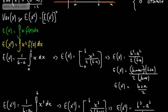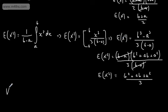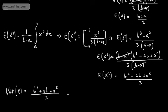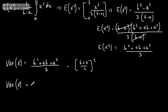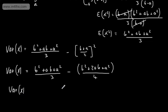Going back to our variance formula, Var(X) = E[X²] minus (E[X])². Substituting, we get Var(X) = (b² plus ab plus a²)/3 minus (b plus a)²/4, which expands to (b² plus 2ab plus a²)/4. Taking the common denominator of 12, we write out the combined fraction.